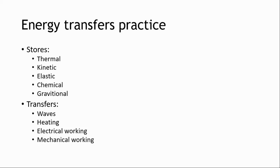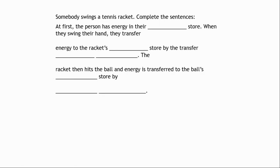You're now ready to do some practice on energy stores and transfers. A reminder: there are five energy stores and four energy transfers. If a question asks you for stores, the only answer you can give is one of those five things; if it asks for transfers, the only answer is one of those four. For a person swinging a tennis racket: the person has energy in their chemical store, they swing their hand which transfers energy to the racket's kinetic store by mechanical working, the racket hits the ball and energy is transferred to the ball's kinetic store again by mechanical working.